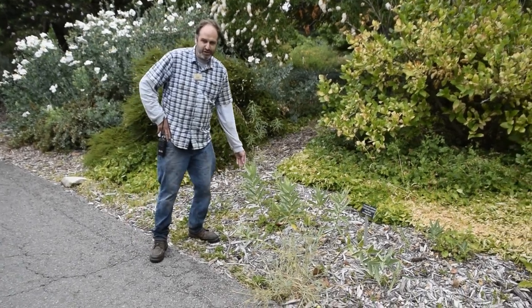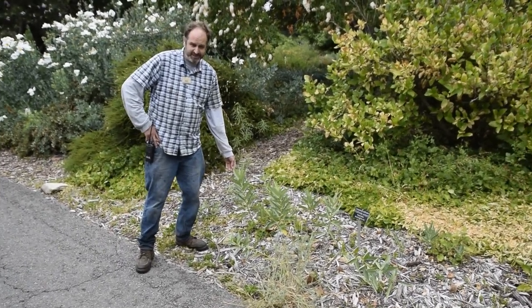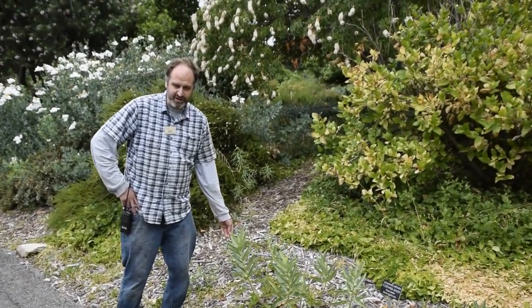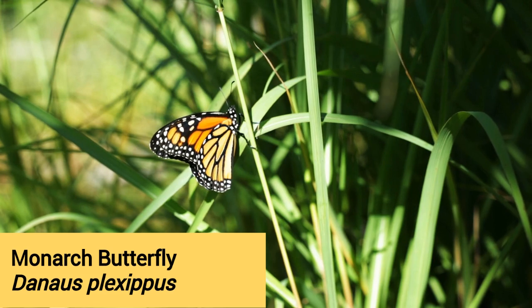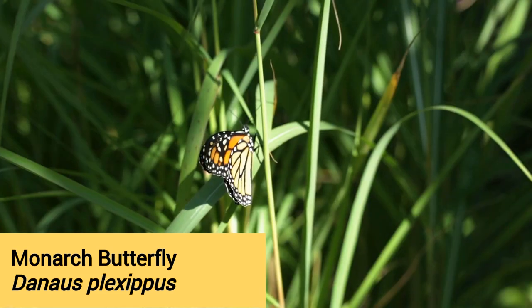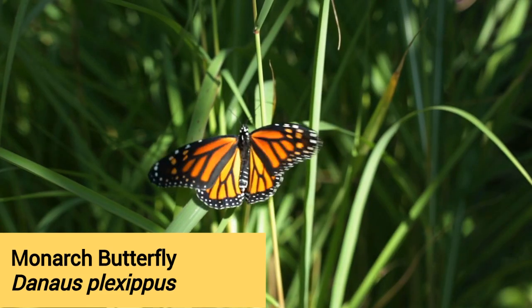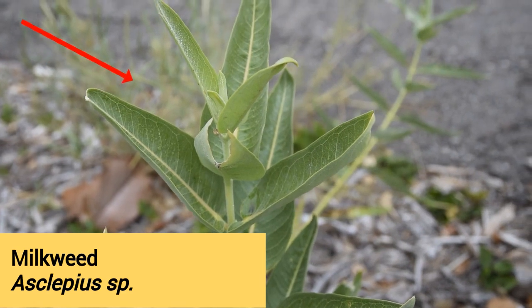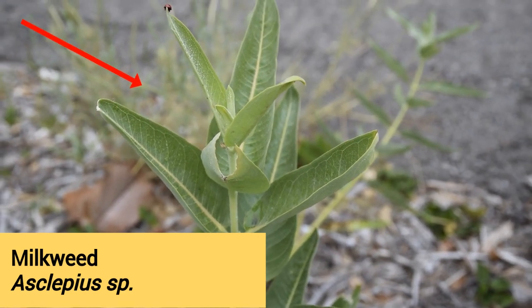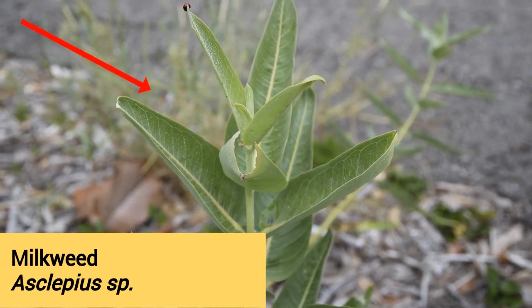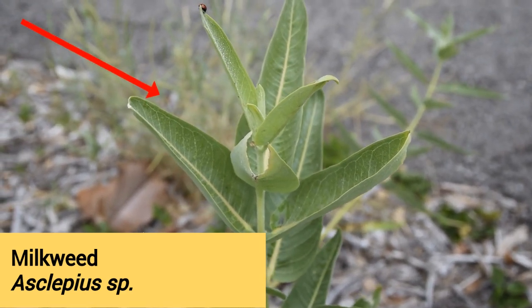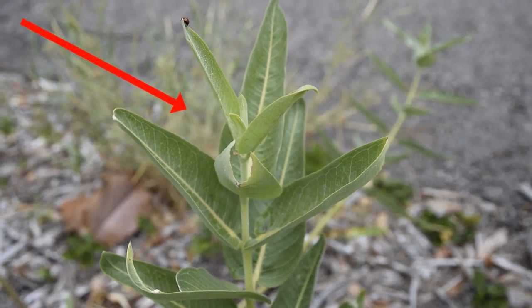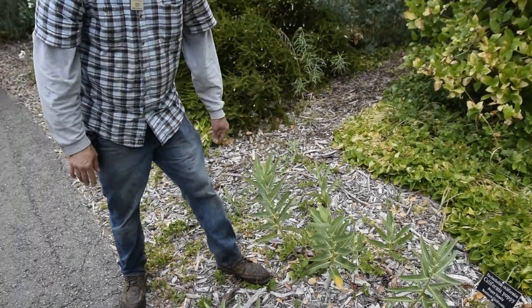Here we have a milkweed, and of course it is the host plant for the monarch butterfly. As you can see here, we have some caterpillar action right here. He's been right here — you can see where he's chewed the leaf. This is their host plant; they only feed on milkweed.